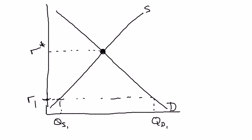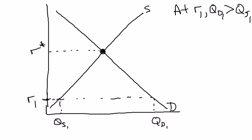At r1, quantity demanded 1 is greater than quantity supplied 1. Who's on the demand side? That's firms who want to borrow funds to finance investment projects. Who's on the supply side? That's the banks that have loanable funds — and remember, we're making a very simple financial sector — so think of it as the households who make those funds available to the banks by saving. That savings is the source of loanable funds.